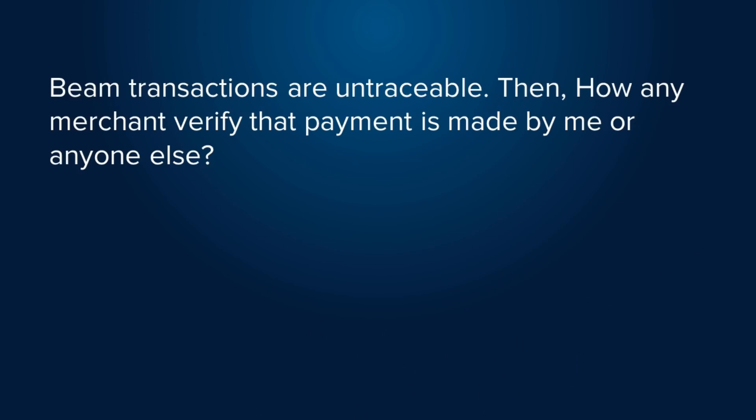The next question is somewhat similar: BEAM transactions are untraceable, so how can any merchant verify that a payment is made by me or anyone else? This is actually a problem that exists in BEAM today and we have solved it with payment proofs. The way it works is that you have a specific wallet ID which is not unique — you can generate a lot of these so it does not really identify your wallet, but it does serve as an additional signature which you apply to your payment. You can generate a proof today inside our wallet; there is a small button called payment proof in the transaction list.